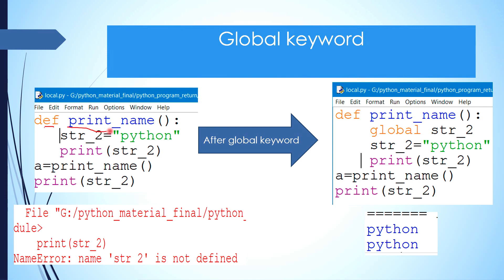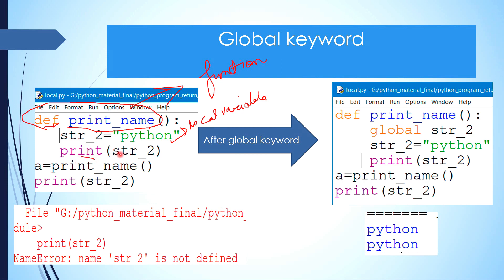Here you can see the function 'print_name' has been defined. This example shows what happens without the global keyword. Inside the function, 'str_to_python' is the local variable. We printed it inside the function — that is fine. But when we tried to access this variable outside the function, it gave us a NameError.